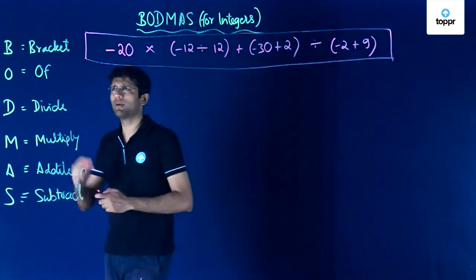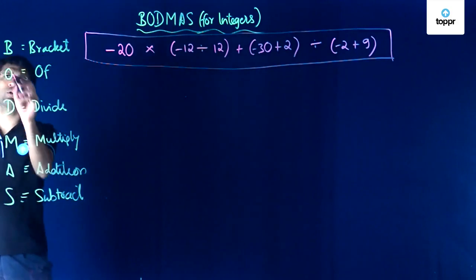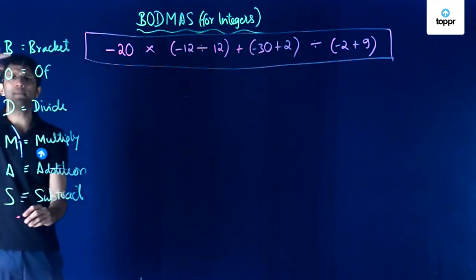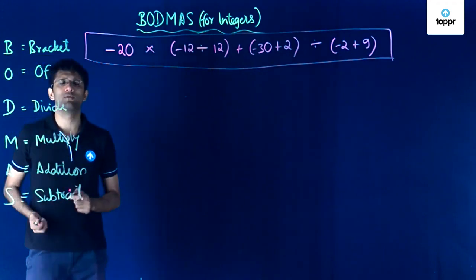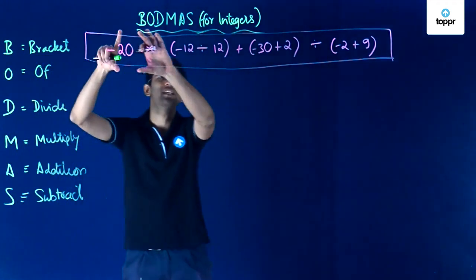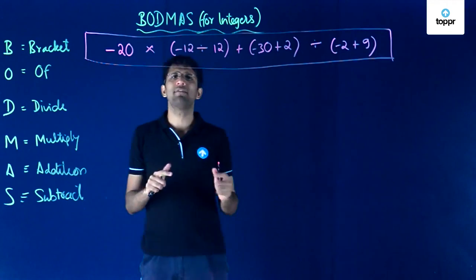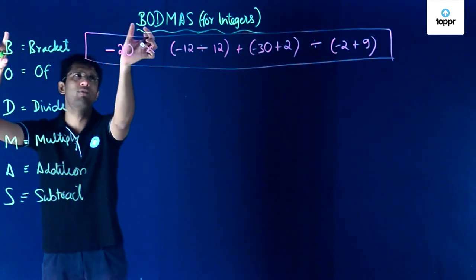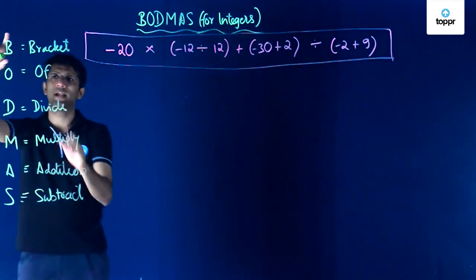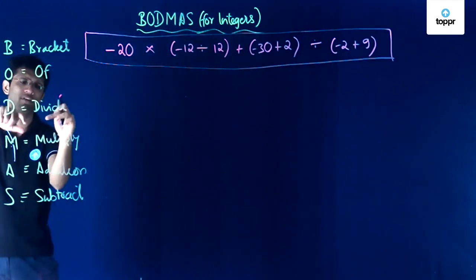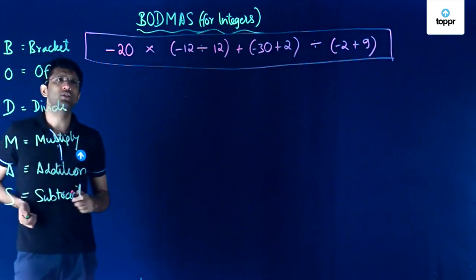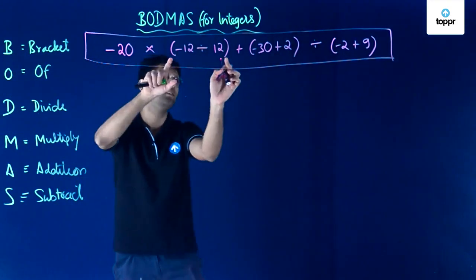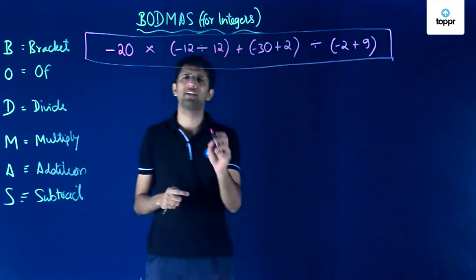Note that in BODMAS, B comes at the very beginning, so if we start from B and go downwards we follow the same order of priority of operators. This means that if we have an expression such as this, the first thing we resolve are the brackets — because B comes before any other letter. So BODMAS means Bracket, Of, Divide, Multiply, Add and Subtract, and the first thing we do is resolve the brackets.